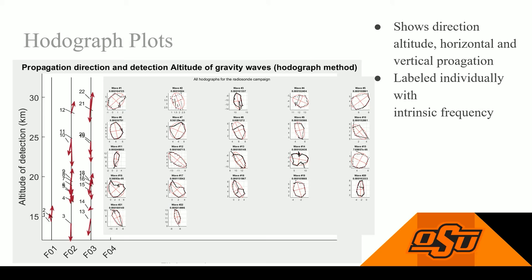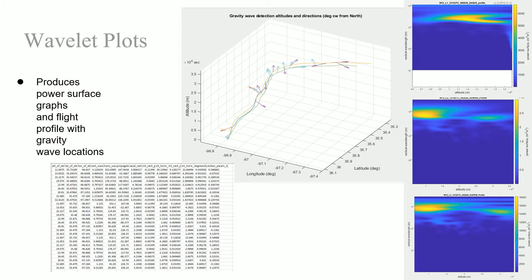The next method we use is the Morley wavelet transform, in which we take the U and V components of the wind data and perform a Morley wavelet transform. From this, we can find the maxima in the data and a few other parameters from the U and V components to determine the locations of possible gravity waves. And then we can analyze them a bit further using the hodograph method. But this process is automated, taking a lot less time than the hodograph.